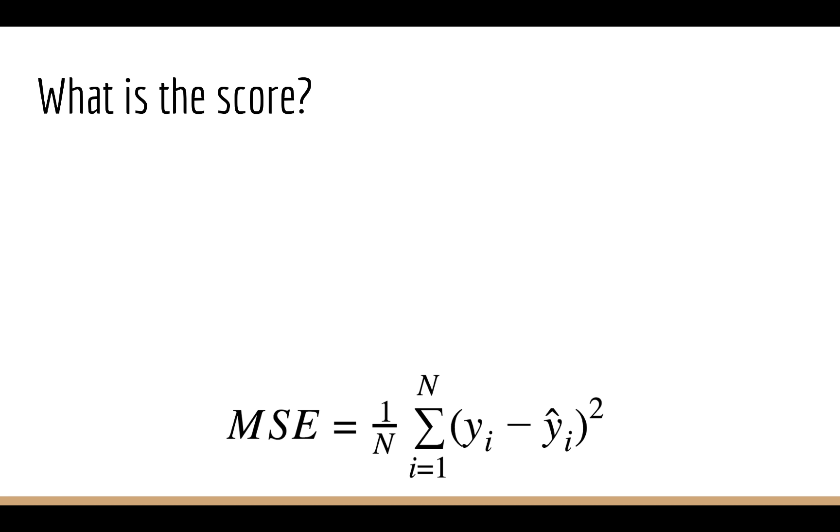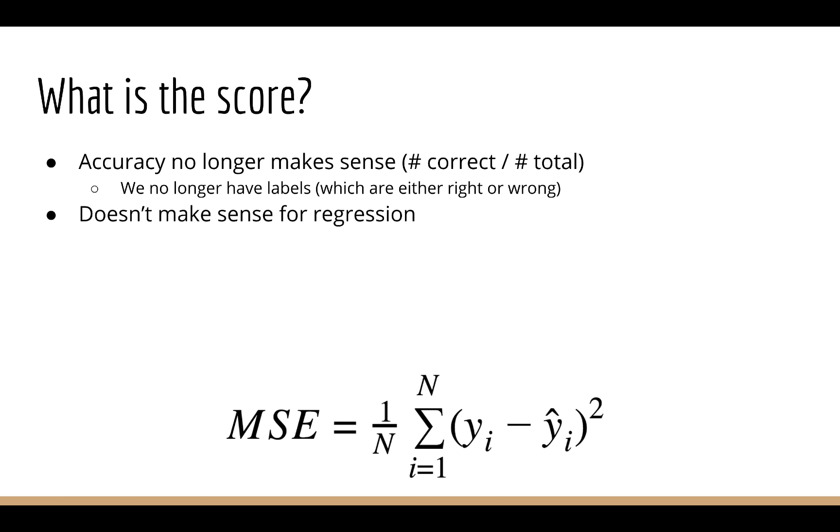One minor difference here is that the score function no longer returns the accuracy, which only makes sense when we're doing classification. Remember that accuracy is just the number correct divided by the number total. That makes sense when we have labels, because if you guessed the right label, then you're correct, otherwise you're not. But for regression, that doesn't really make sense.